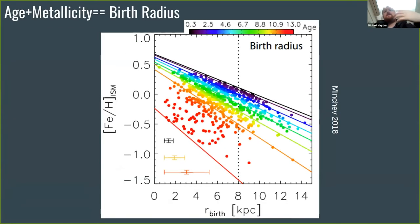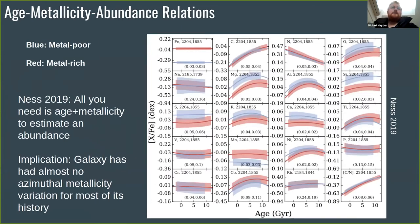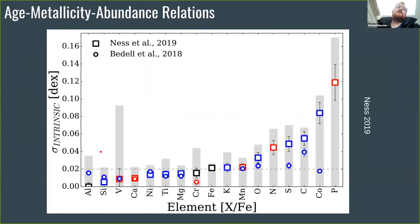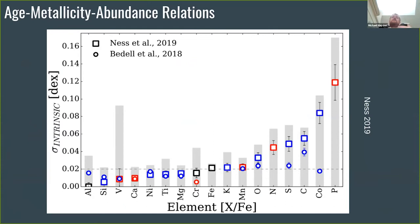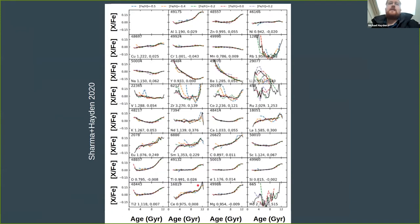We need to check if Ivan Minchev's model is correct — that metallicity and age uniquely define birth radius and chemistry. Melissa showed in 2019 using APOGEE that if you know age and metallicity, you can estimate the abundances for a star quite well, to about 0.02 dex. The downside is that APOGEE really only measures iron-peak and alpha elements, so this is where GALAH comes in, because GALAH measures many more elements.